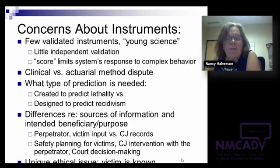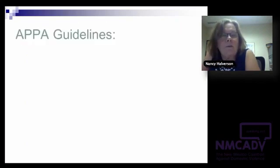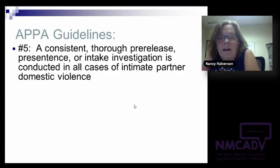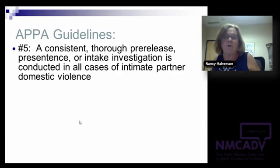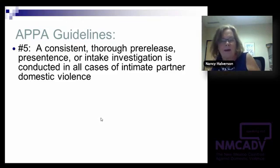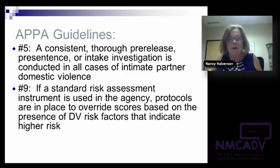Guideline number nine states that if a standard risk assessment is used, you've got to have protocols in place to override scores if DV factors are present. It also says all cases of intimate partner domestic violence — not just felonies, not just gross misdemeanors. It really says all, and that's a tough one for corrections departments not used to doing much with misdemeanors. There's a link available to a 200-page corrections manual on the assessment and supervision of DV offenders.